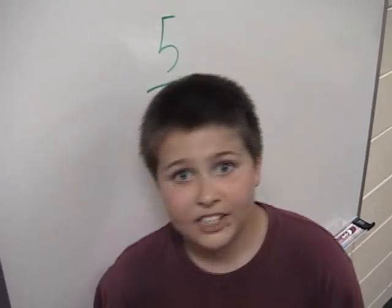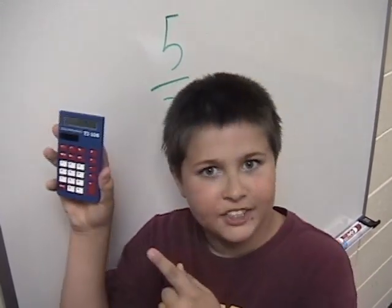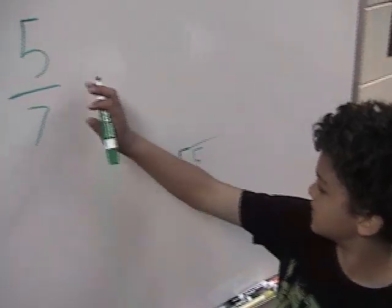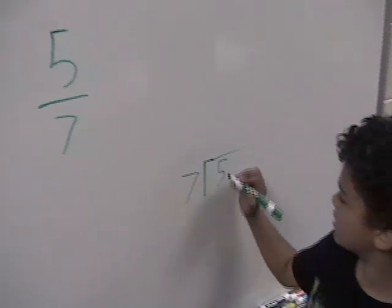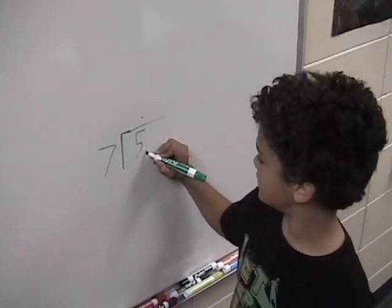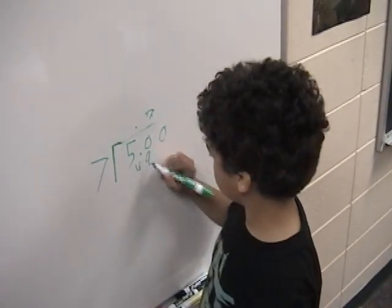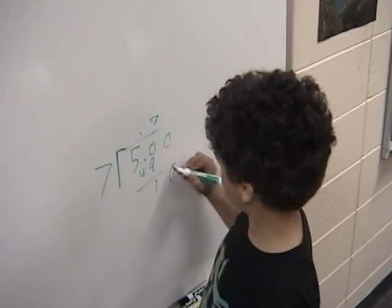To make a decimal out of a fraction, the calculator's easy but gives less satisfaction. Divide the top by the bottom and add a decimal point — add a couple zeros and you won't be disappointed.